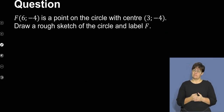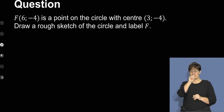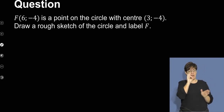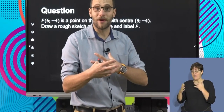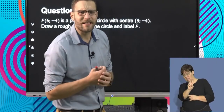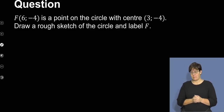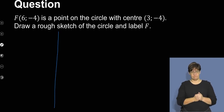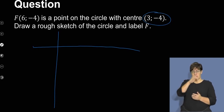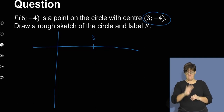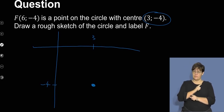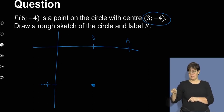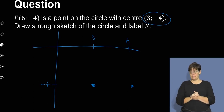The next example: point F(6, -4) lies on a circle with center (3, -4), and they want us to draw a rough sketch labeling point F. I'll draw my Cartesian plane: the circle center is at x = 3, y = -4, and point F is at x = 6, also with y-value minus 4.